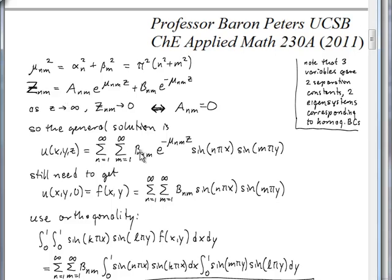Okay, so the general solution now, the general solution is that I have a double sum over n and m of the coefficient b n,m with the exponentially decaying z dependence multiplied by the eigenfunctions for the x and y variables, right? So note that we have two separation constants here that came out of a Dirichlet problem with three variables, right? X, y, and z.